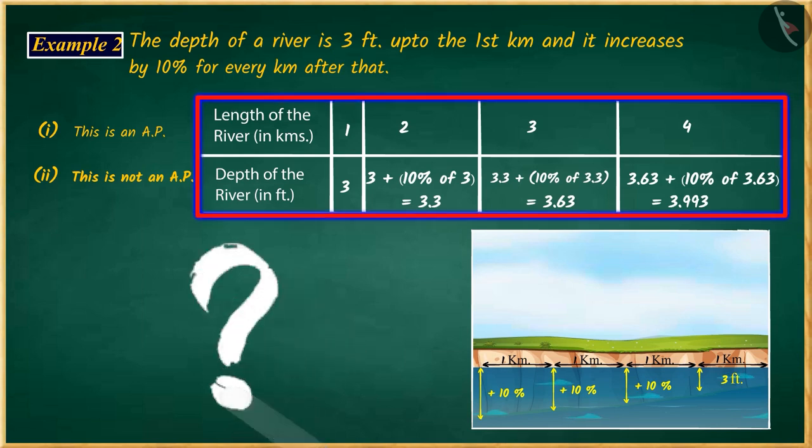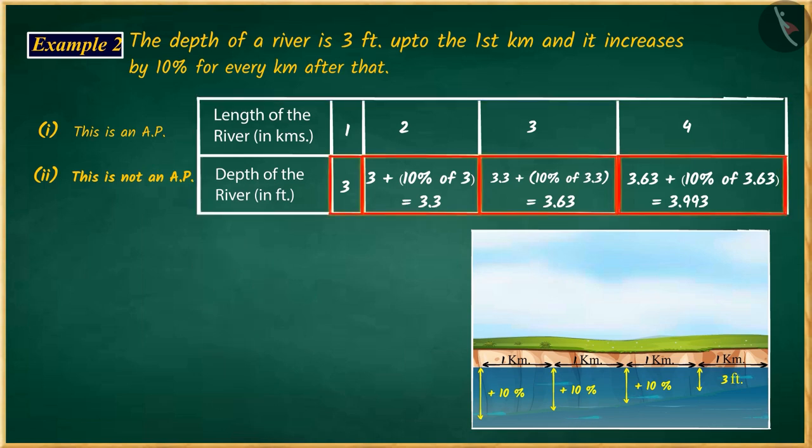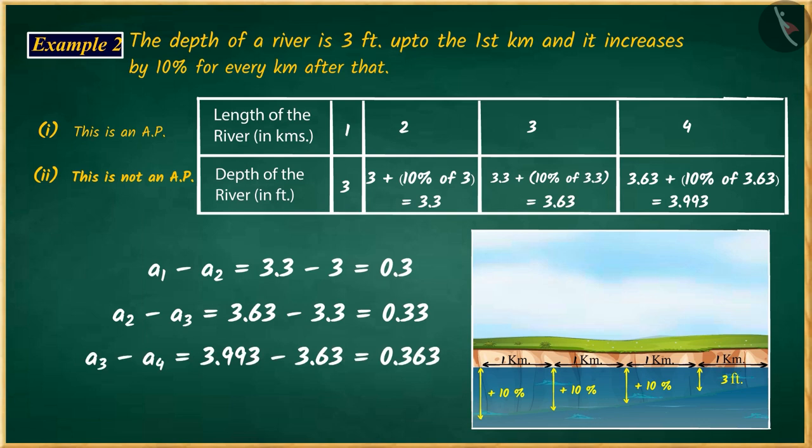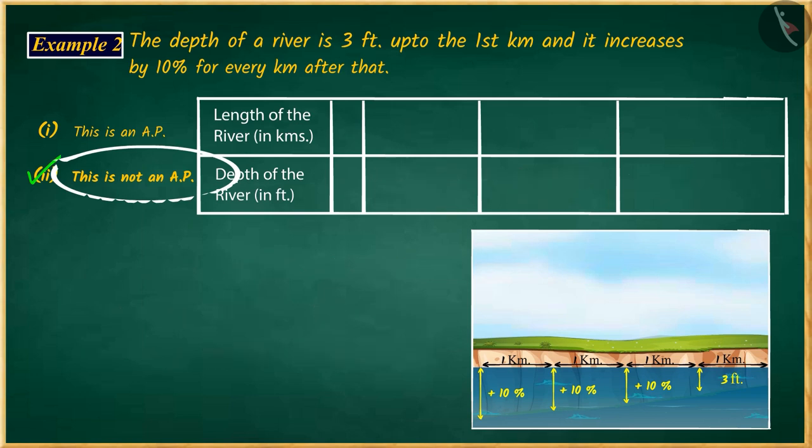Is this an arithmetic progression, that is an AP? To check this, we will have to discuss the common difference of this series. When we find the difference between the two consecutive terms of this series, we find that this difference is not the same. Hence, this series is not an arithmetic progression. So, option 2 is the correct answer.